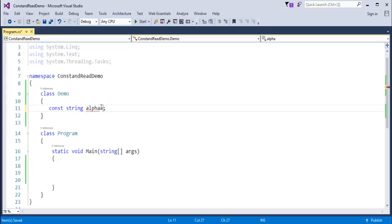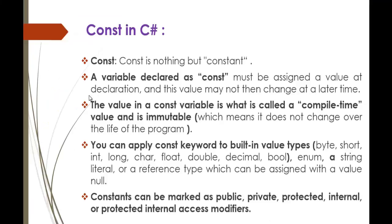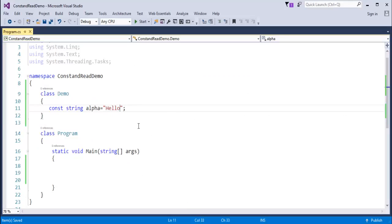Now I have assigned the value to it and it works fine. What we learned here is how to declare a variable with the const keyword, and the requirement is you must assign a value to it immediately when you define it. The value in the const variable is what is called a compile-time value and it is immutable — whatever value is stored in this variable cannot be changed.